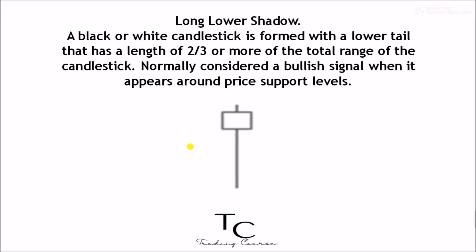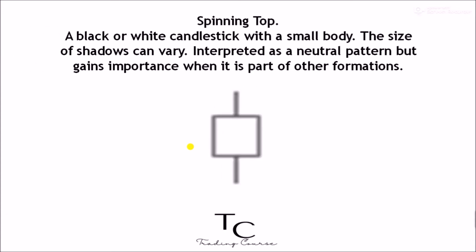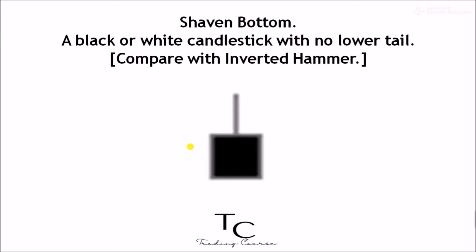Long upper shadow is normally considered a bearish signal when it appears around price resistance levels. Long lower shadow — a black or white candlestick formed with a lower tail that has a length of two-thirds or more of the total range of the candlestick; normally considered a bullish signal when it appears around price support levels. Marubozu — a long or normal candlestick, black or white, with no shadow or tail; the high and the low represent the opening and closing prices. Considered a continuation pattern. Spinning top — a black or white candlestick with a small body; the size of shadows can vary; interpreted as a neutral pattern but gains importance when it is part of other formations. Shaven head — a black or white candlestick with no upper shadow. Shaven bottom — a black or white candlestick with no lower tail.